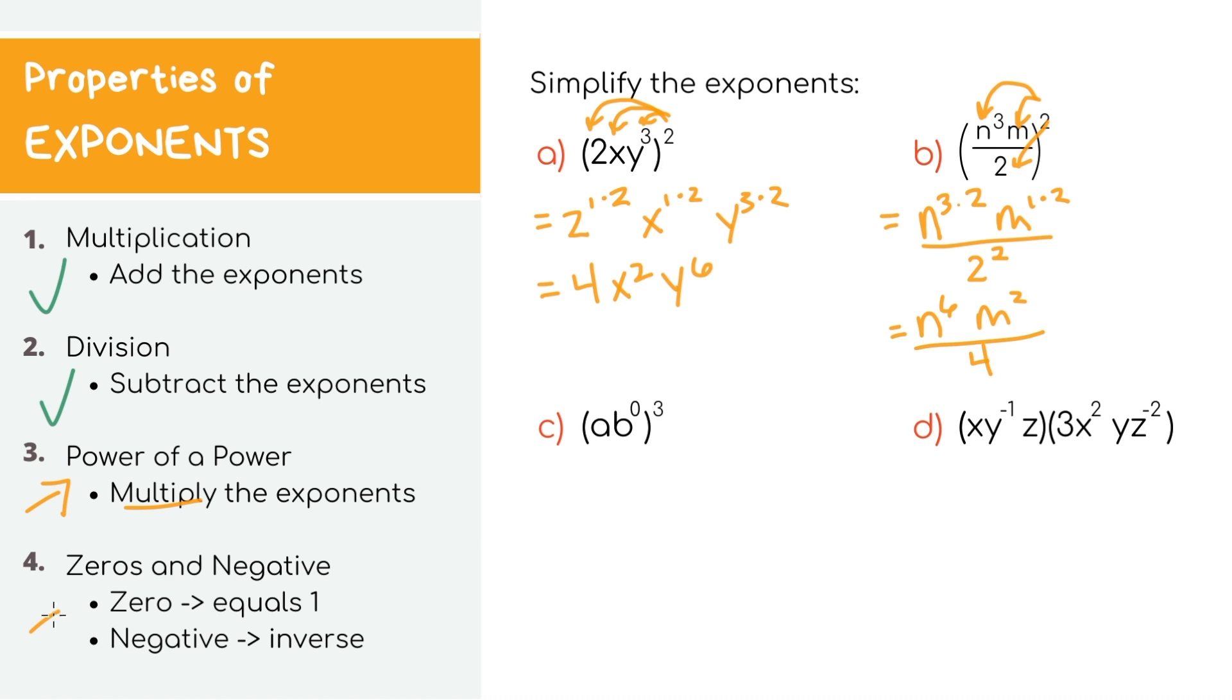Now let's talk about these special cases. When you see a 0 as an exponent, this just equals 1, because anything to the 0th power automatically equals 1. In example C, it initially looks like a power to a power, but we can first just simplify right off the bat because b is raised to the 0th power, which just equals 1.